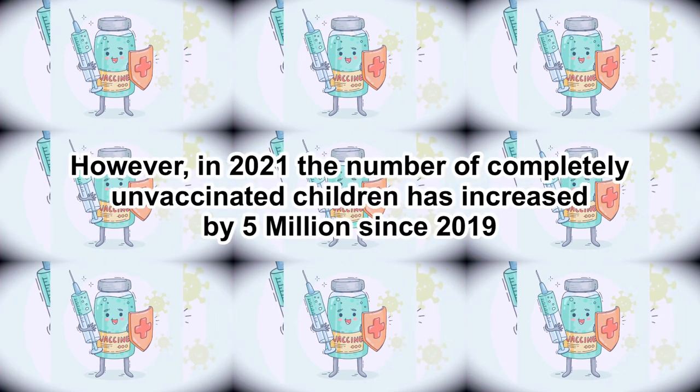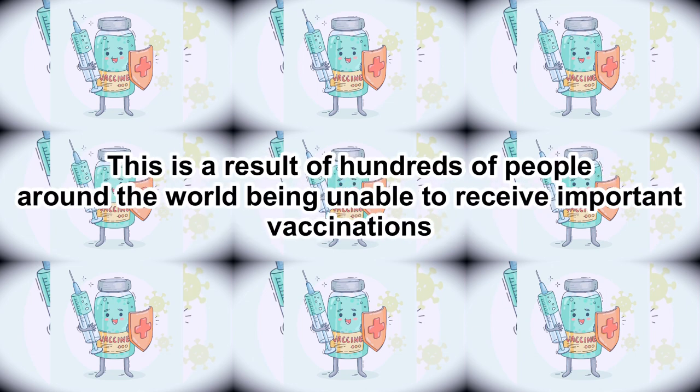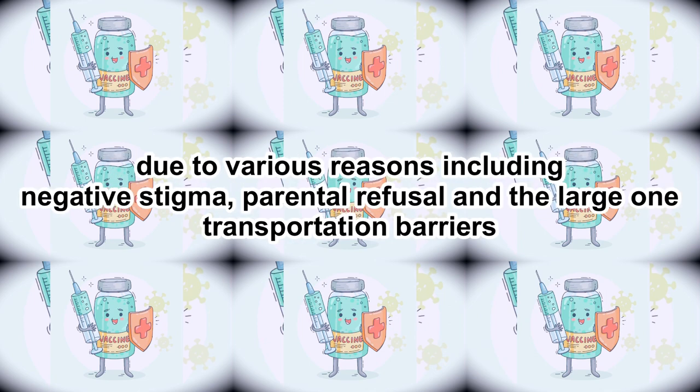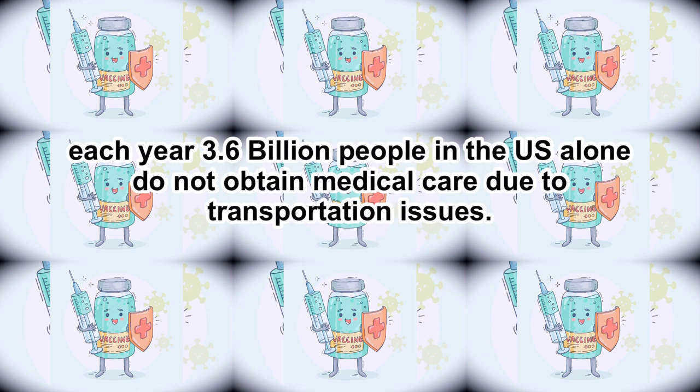However, in 2021, the number of completely unvaccinated children has increased by 5 million since 2019. This is a result of hundreds of people around the world being unable to receive important vaccinations due to various reasons, including negative stigma, parental refusal, and transportation barriers. Each year, 3.6 million people in the U.S. alone do not obtain medical care due to transportation issues.